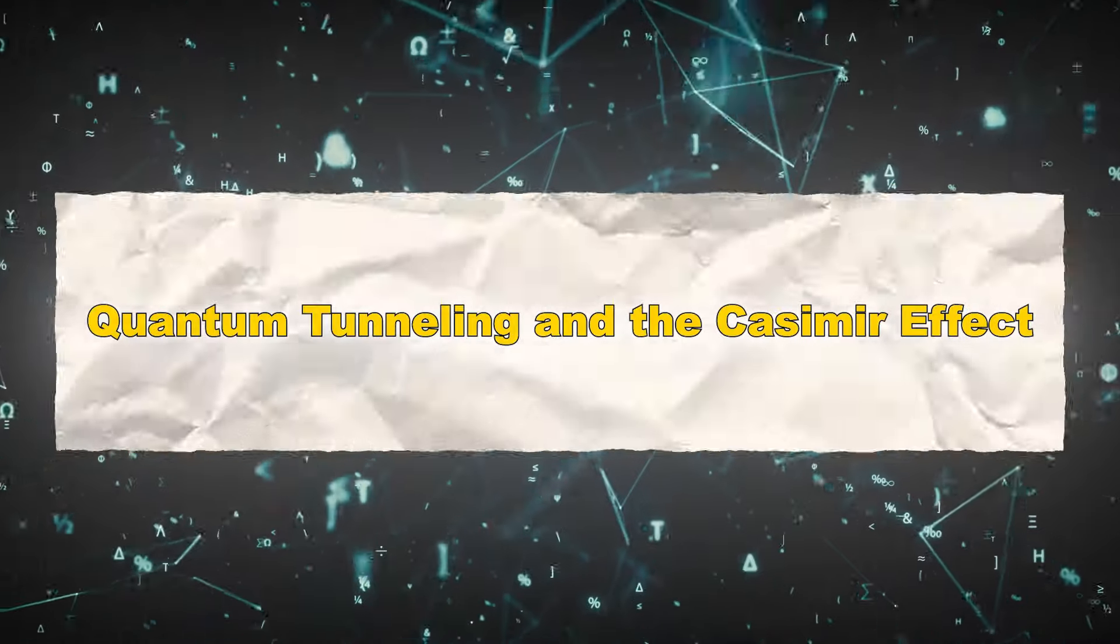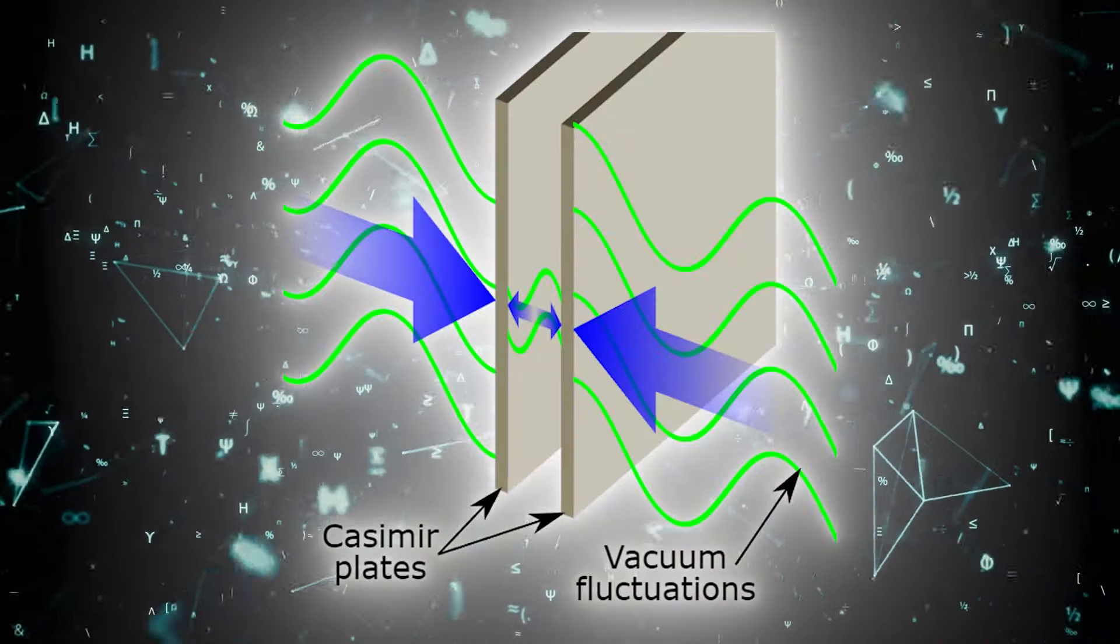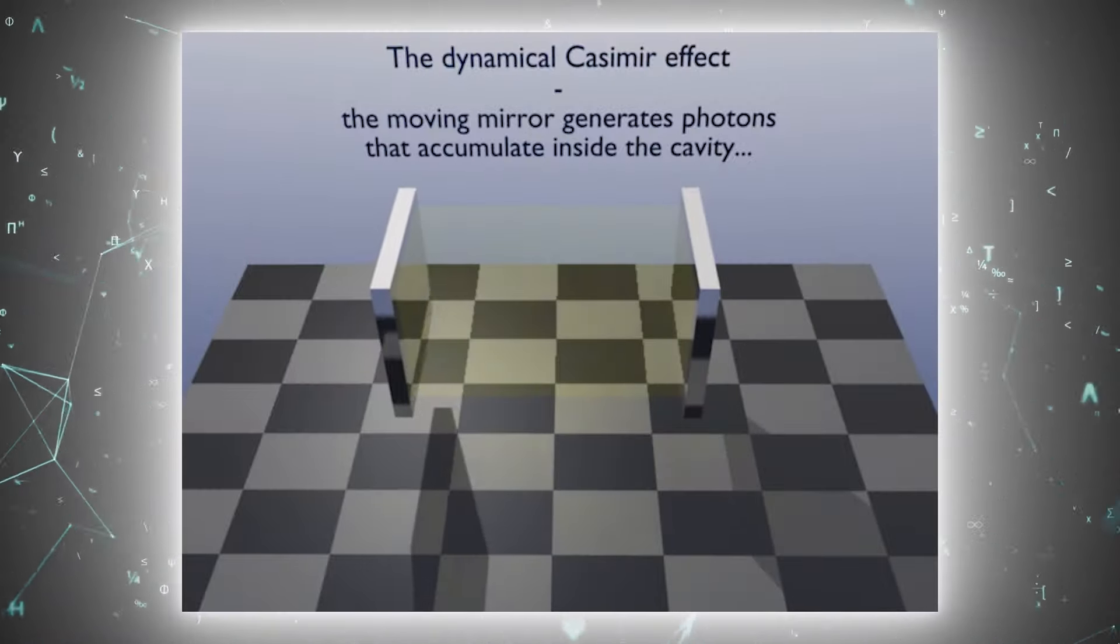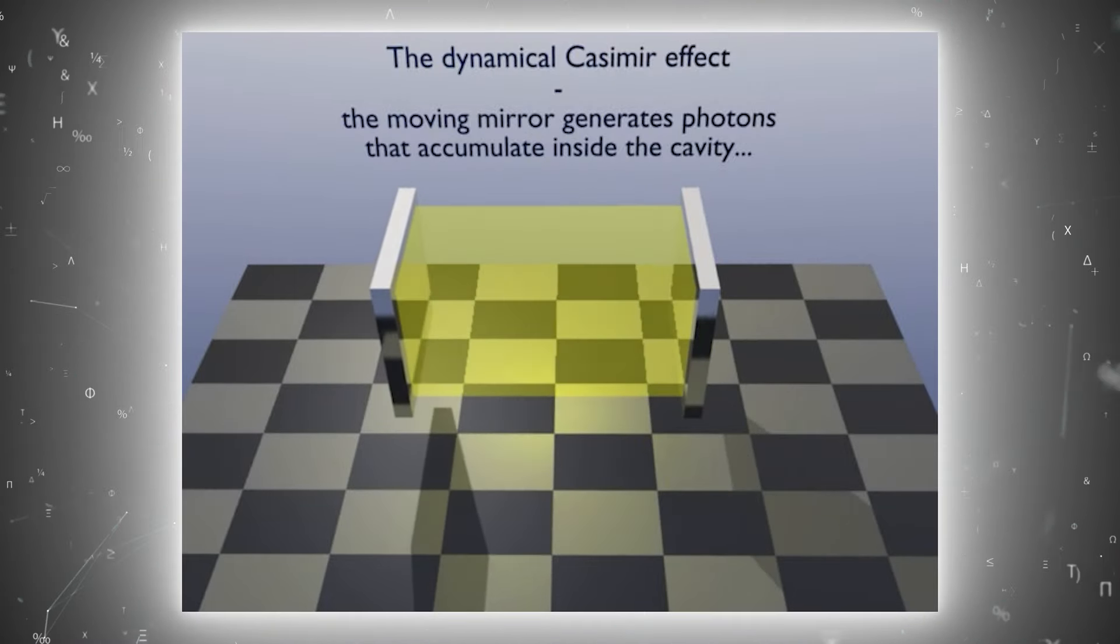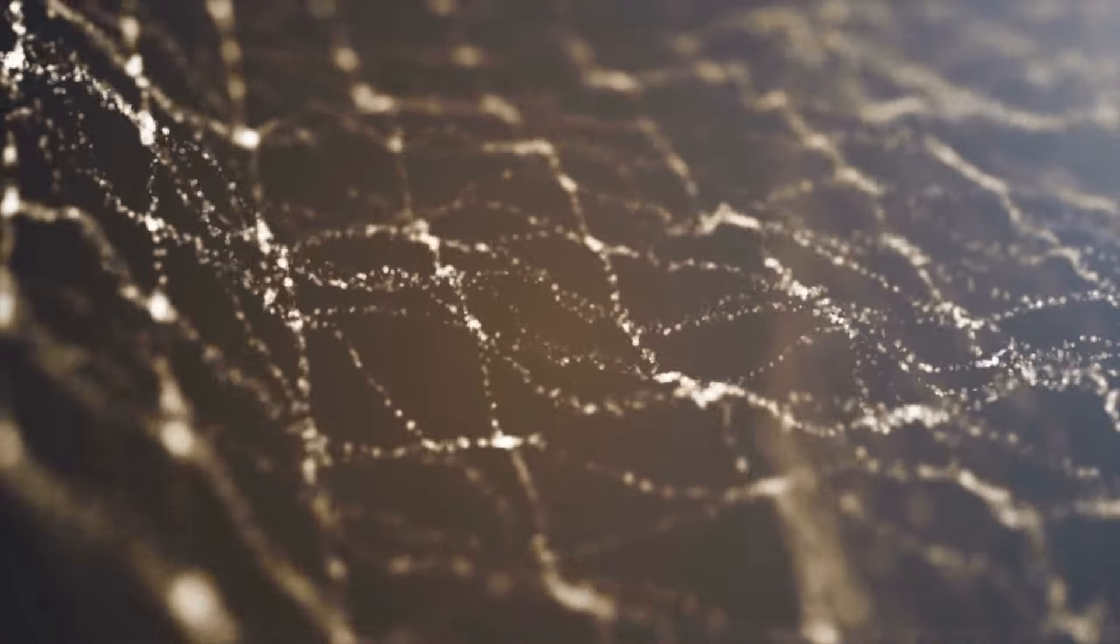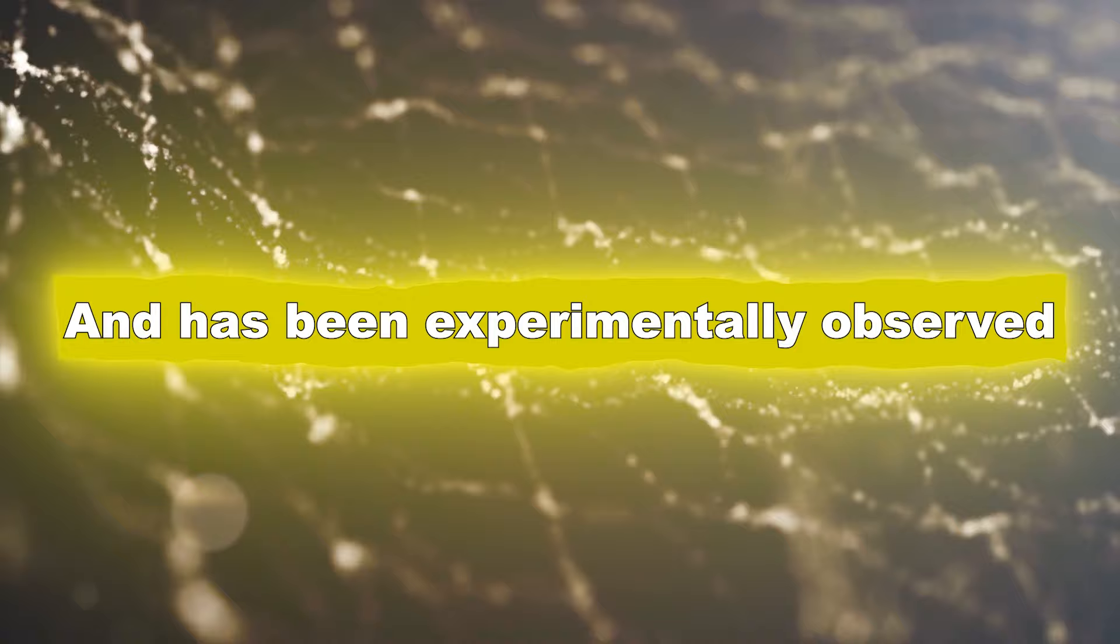Quantum tunneling and the Casimir effect. The Casimir effect is another phenomenon related to quantum tunneling, where two uncharged parallel plates placed very close together in a vacuum experience an attractive force. This force arises due to the quantum fluctuations of the vacuum field and has been experimentally observed.